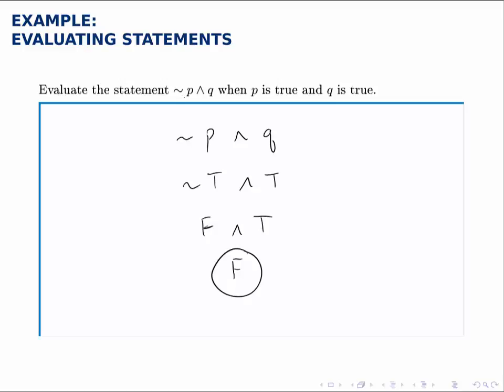So this statement, not P and Q, is false if both P and Q are true. And this will be useful as we go forward and build truth tables.